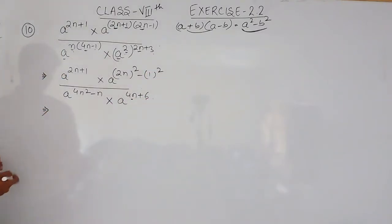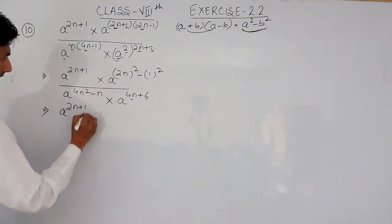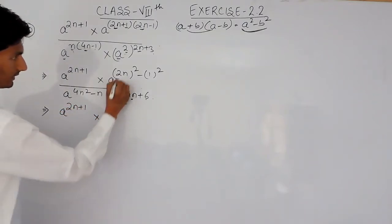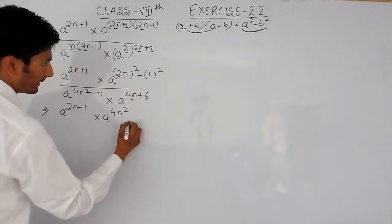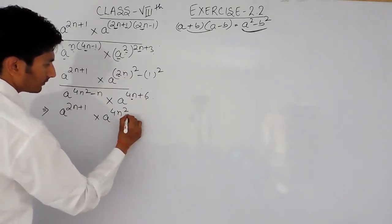Further solving this, this is a raised to the power 2n plus 1, multiplied by a. This is 2n whole square means 2 square is 4, n square is n square minus 1.